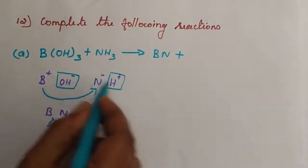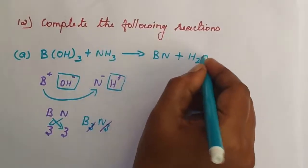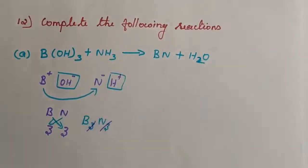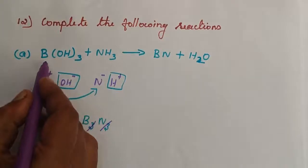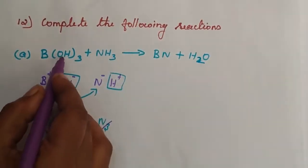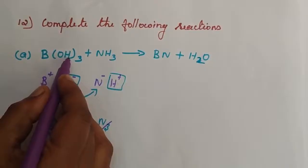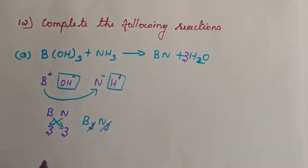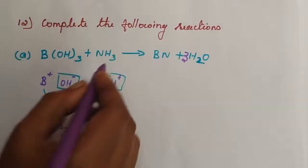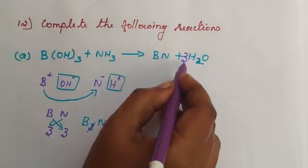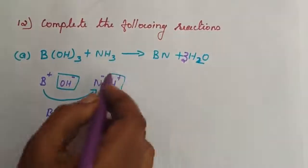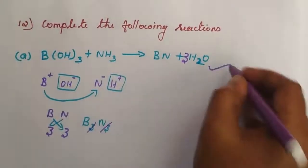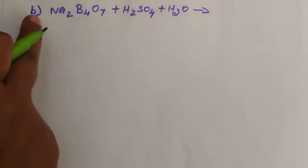OH minus and H plus combine to give H2O as the other product. Now we need to balance the equation. We balance boron and nitrogen, with H2O on the product side. The equation is balanced, so we can move to the next question.